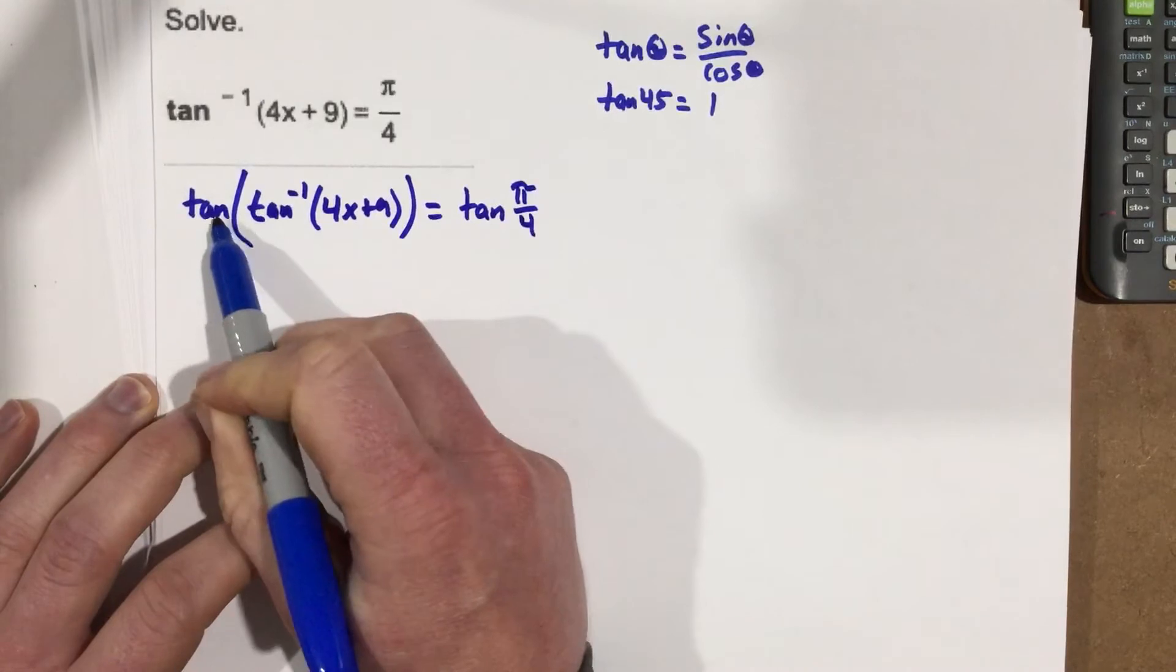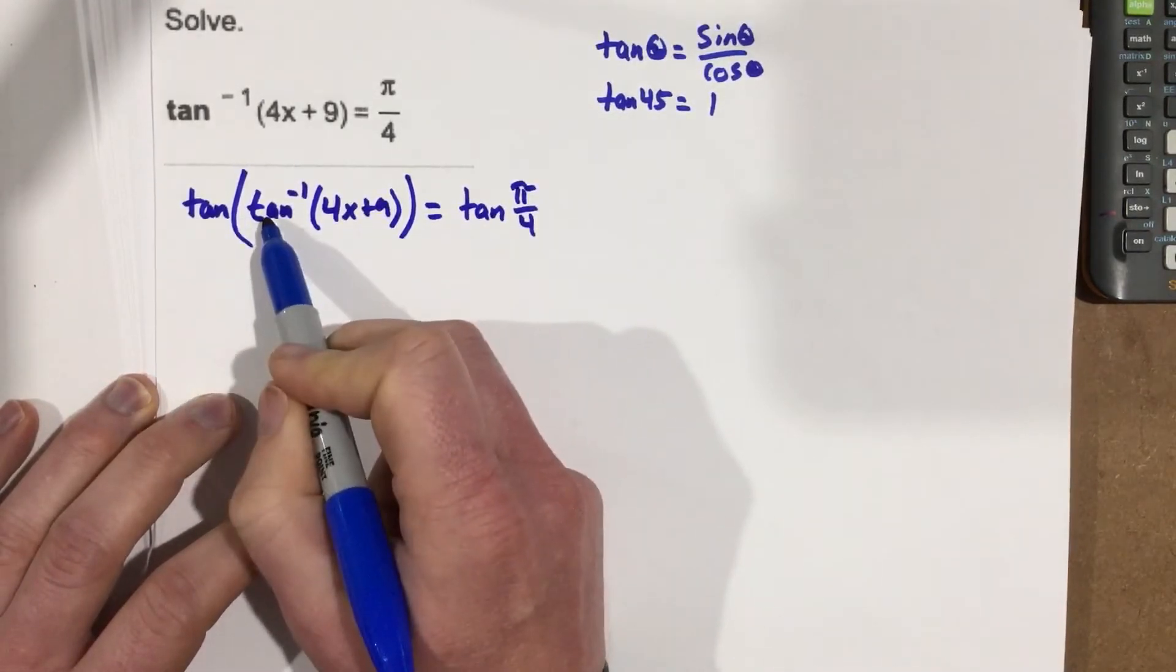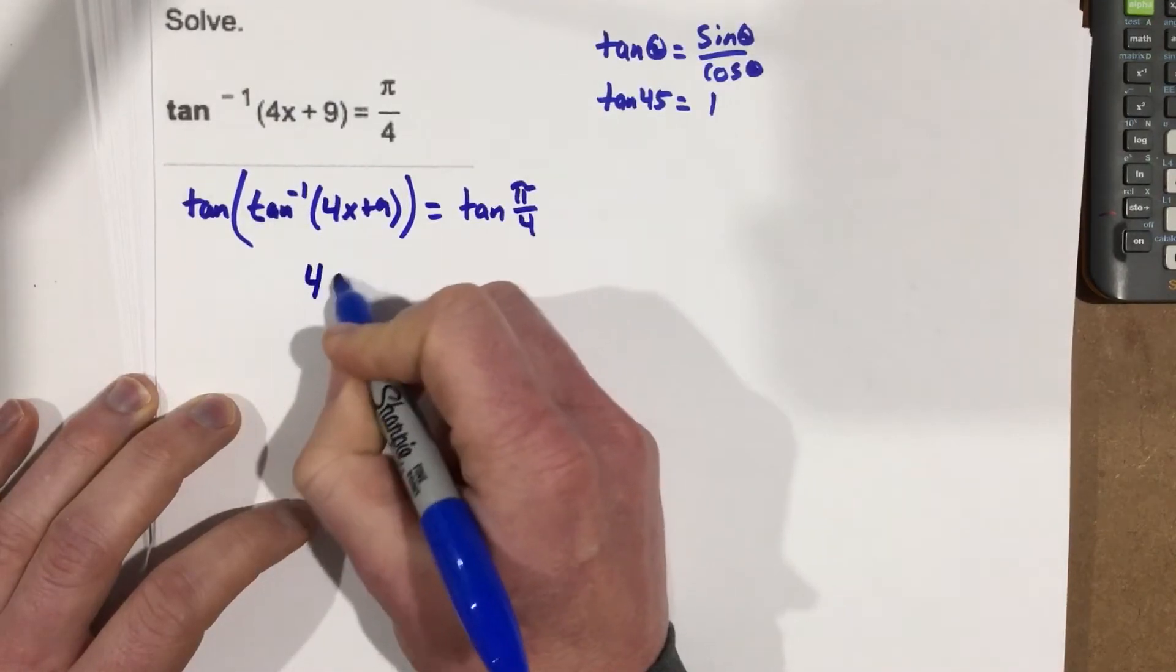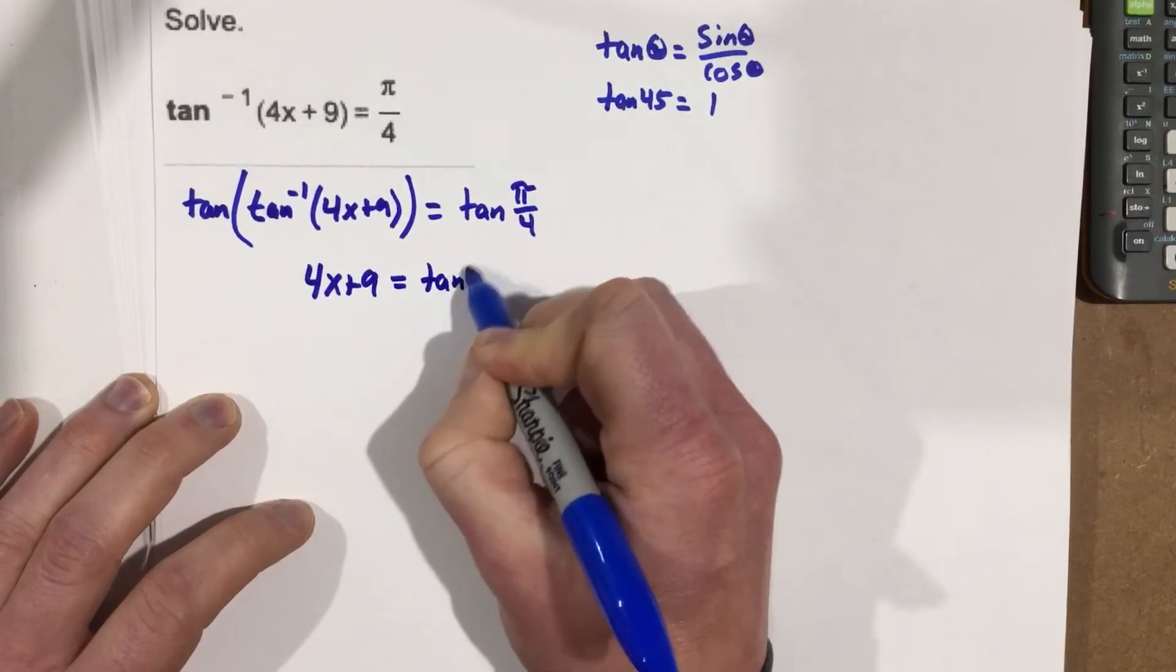But when I take the tangent of the left side, because they're inverses, we know inverses cancel each other out. So tangent and tangent inverse, they cancel each other out. And I'm just left with 4x plus 9 equals tan of pi over 4.